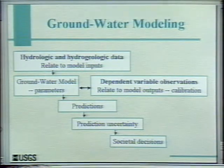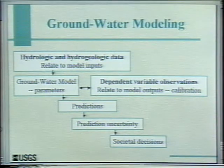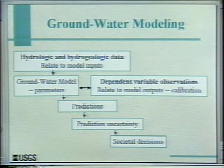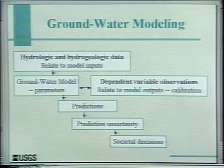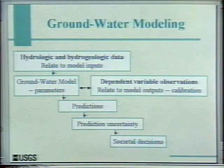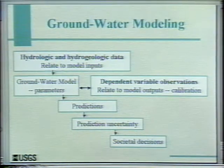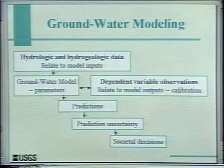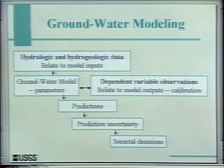There might be some mismatch between what you've observed in terms of outputs and what you've simulated, so you have to go into this process of calibration. Once the model's developed, the goal is generally to use it to make some kind of prediction — hopefully evaluating prediction uncertainty in some way. Then this analysis goes into making what are sometimes very significant societal decisions.